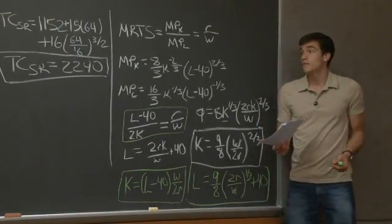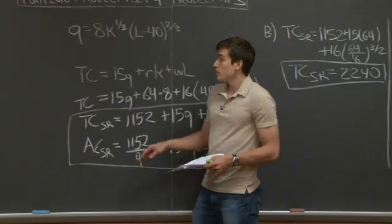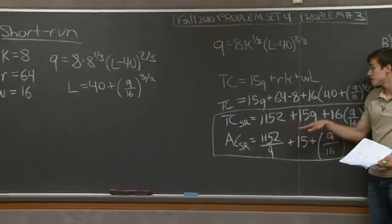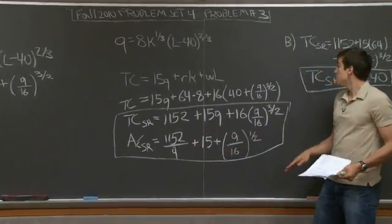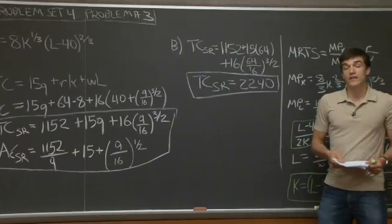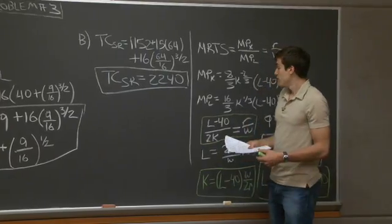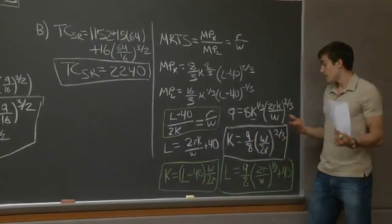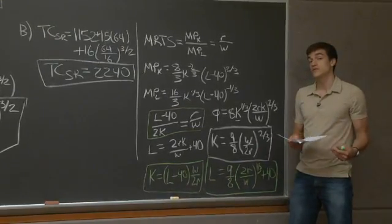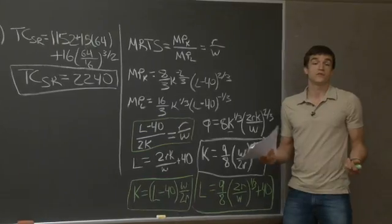To summarize: we started with the short run scenario, where capital was fixed at 8, and found the total cost and average cost functions. Given a fixed quantity to produce, we solved for the short run total cost. Then in the long run, we allowed the producer to vary capital, and using the MRTS condition we derived conditional demands for capital and labor as functions of wage rate, rental rate, and quantity produced.